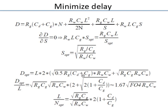Expressing delay per unit length — picoseconds per millimeter — is useful for designers. Reordering the expression, the delay per unit length involves √(Rw·Cw) multiplied by a factor that depends on CD/CG (the ratio of drain to gate capacitance of the inverter), which is a technology-specific constant. Rg·CG is related to τ, and the whole expression can be related to the fanout-4 delay.